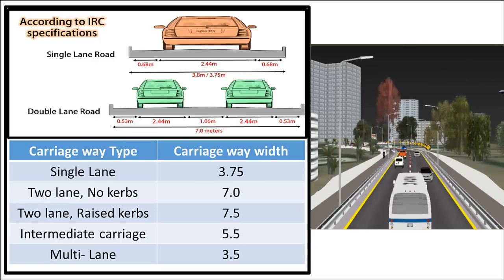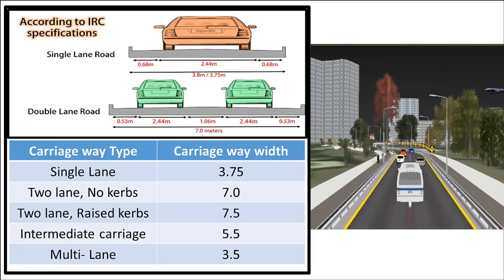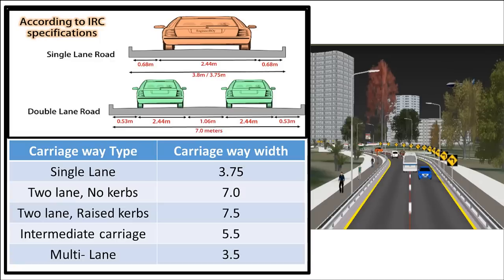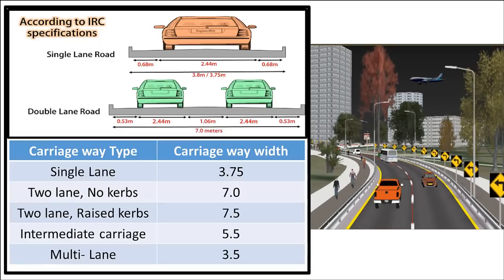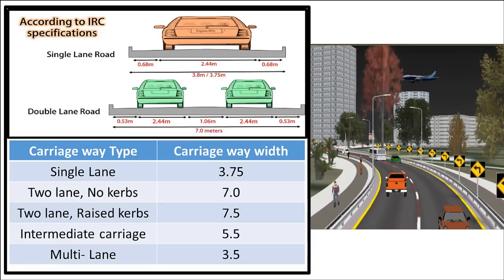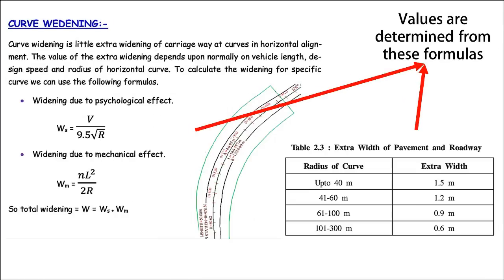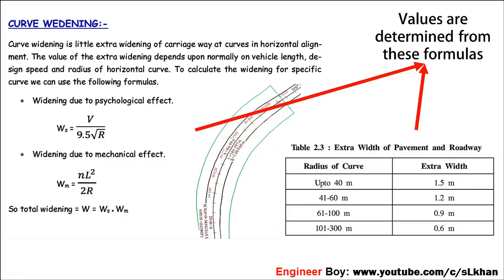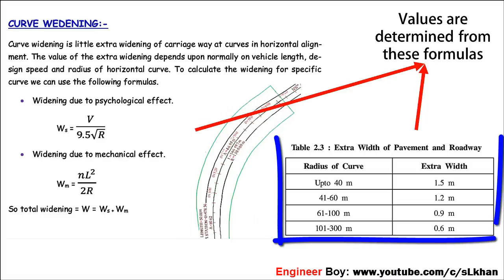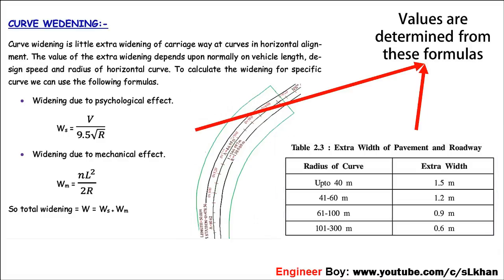Remember, all the widths shown in the table for carriageway breadth are only for cases when the road or highway is in a straight line. What if the road does have horizontal curves? In that case, we provide extra width of pavement on horizontal curves. With a radius up to 300 meters, the breadth of pavement and roadway will be increased as per the IRC specifications table.